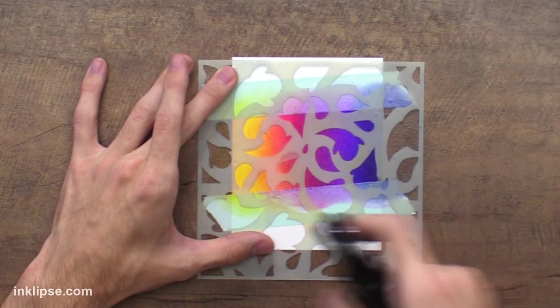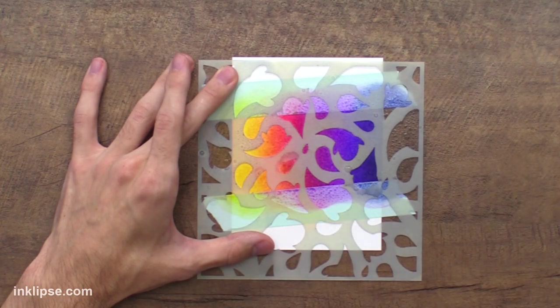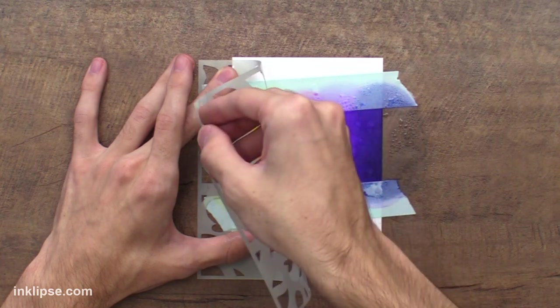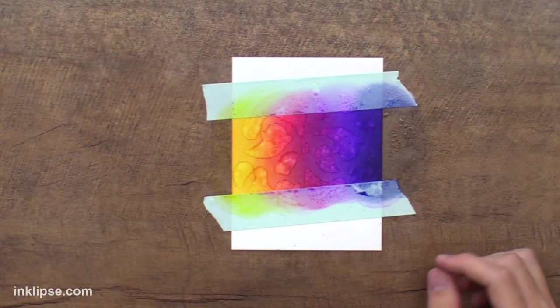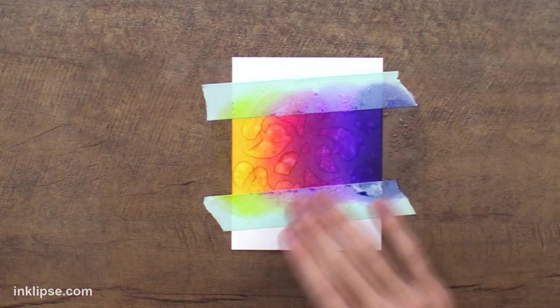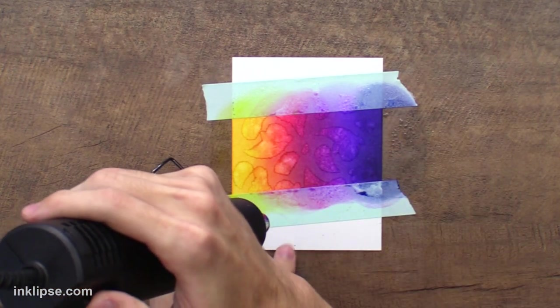So I'm just going to go in, spray this down with some water. That's a pretty generous amount. Let's see. Yeah, I think that's pretty good. So I'm going to lift off that stencil, and then if I want it to stop lifting and reacting and bleeding, I'll go in with my heat tool and heat set this.